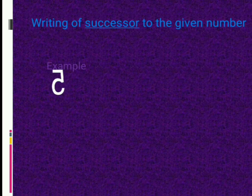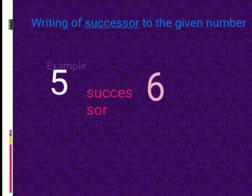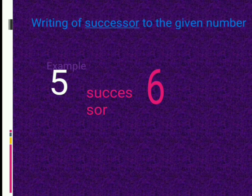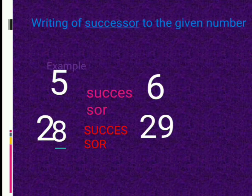Writing of successor to the given number. Example: Five. Five's successor is six. Twenty-eight. Twenty-eight's successor is twenty-nine.